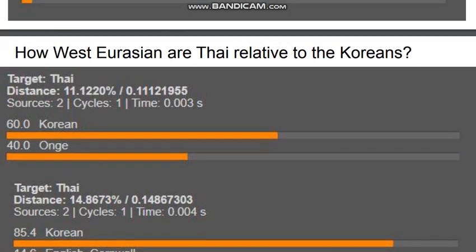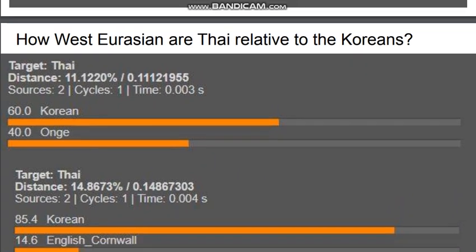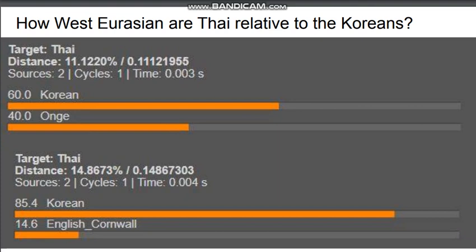How West Eurasian are Thai relative to Koreans? I was under the impression that Southeast Asians were very East Asian and did not have any Caucasoid ancestry, but they do. The Thai have 40% Onge or AASI ancestry relative to Koreans, which is a lot — almost half South Indian in ancestry. And South Indians and Onge are in turn about half West Eurasian. Thai can also be modeled as 85.4% Korean and 14.6% English/Cornwall, which is a very strong West Eurasian influence.